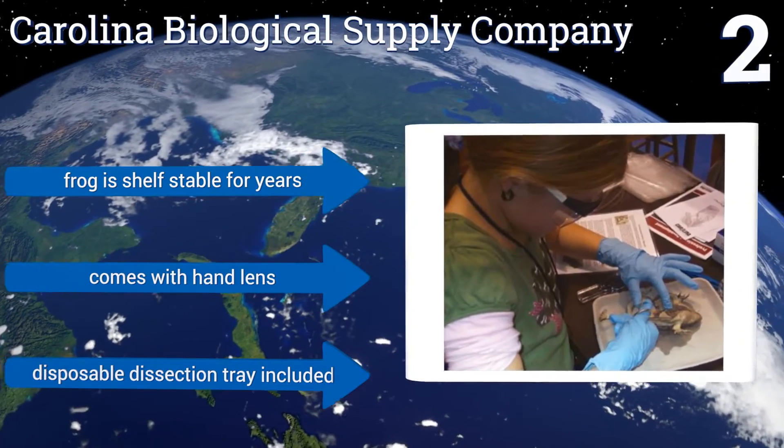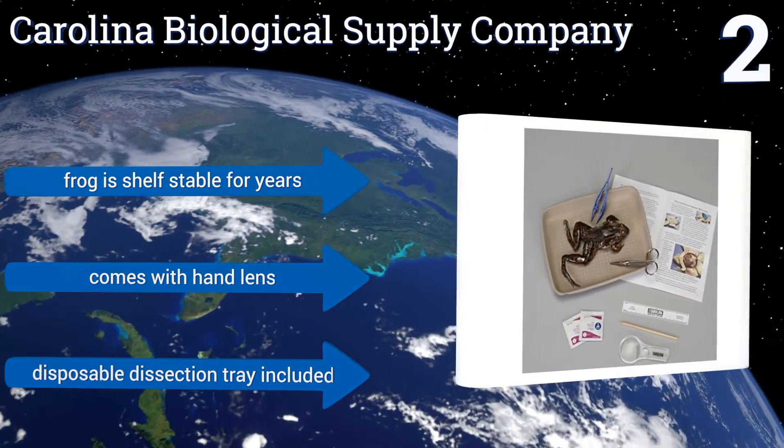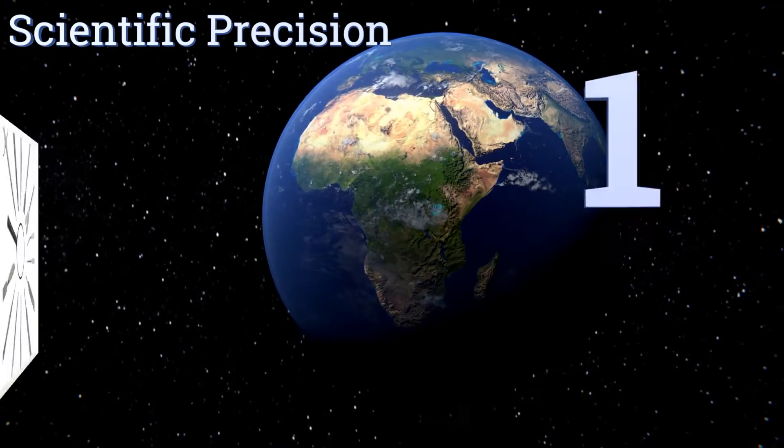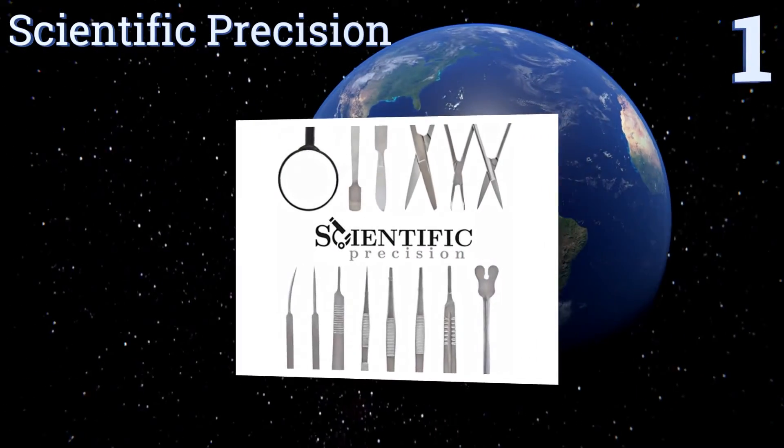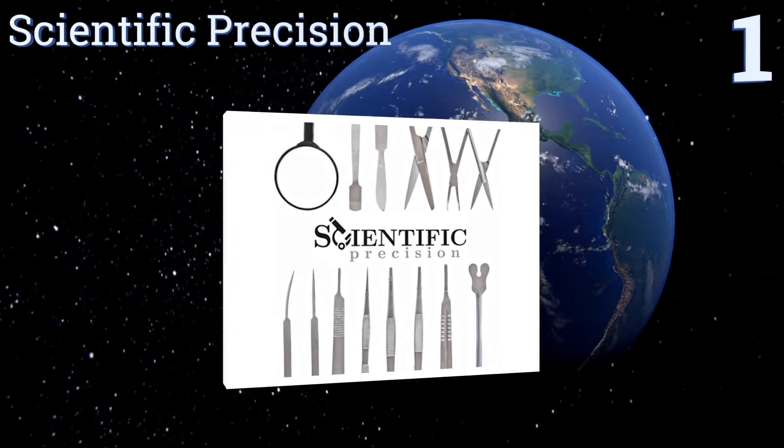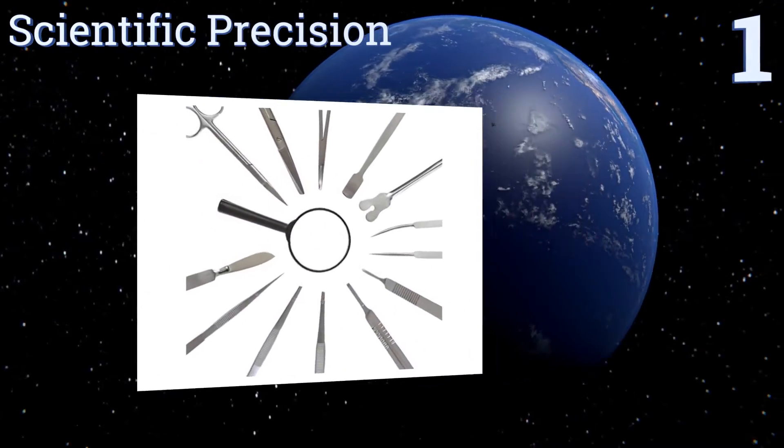And coming in at number 1 on our list, this 20-piece set from Scientific Precision is an ideal choice for the serious student of anatomy or biology. It's affordable, yet contains every basic instrument needed for advanced dissections.